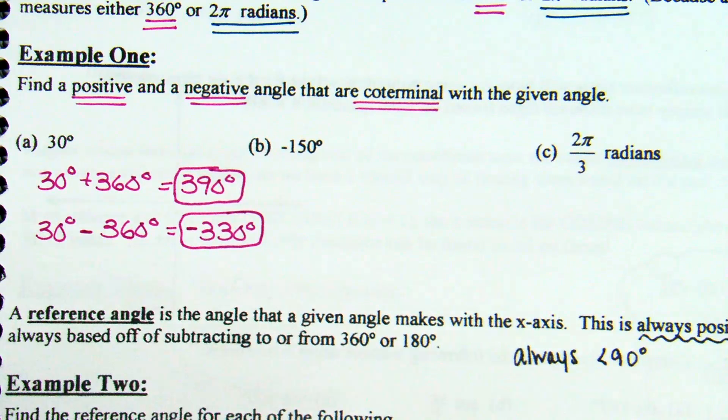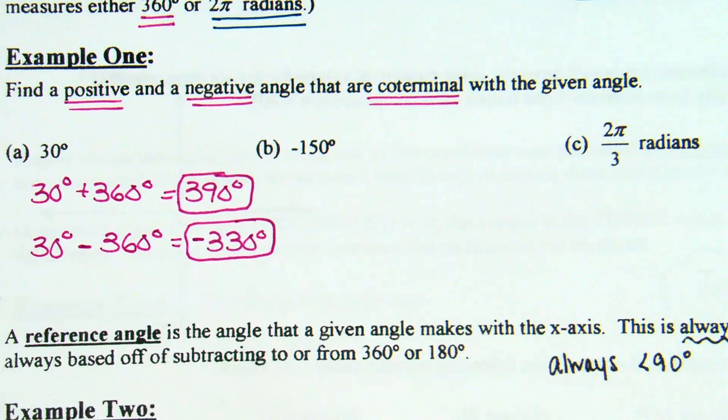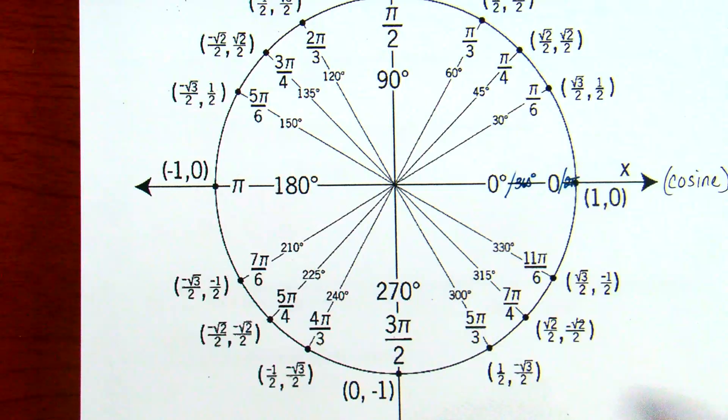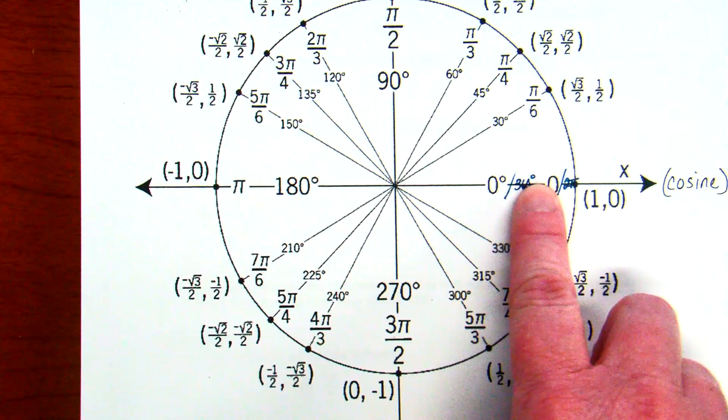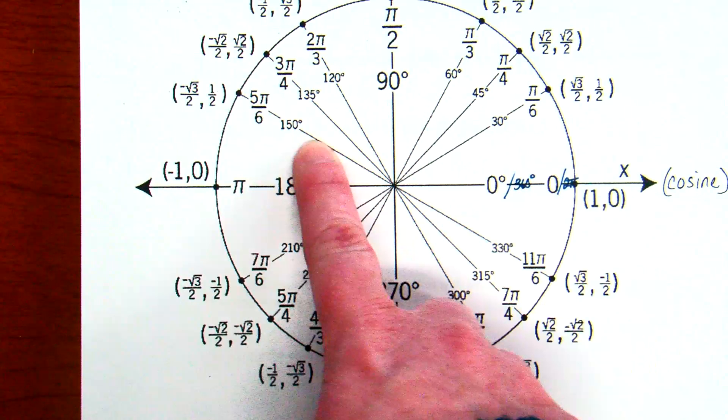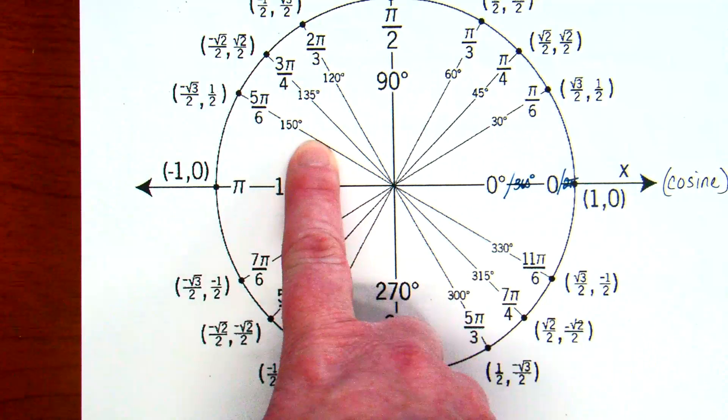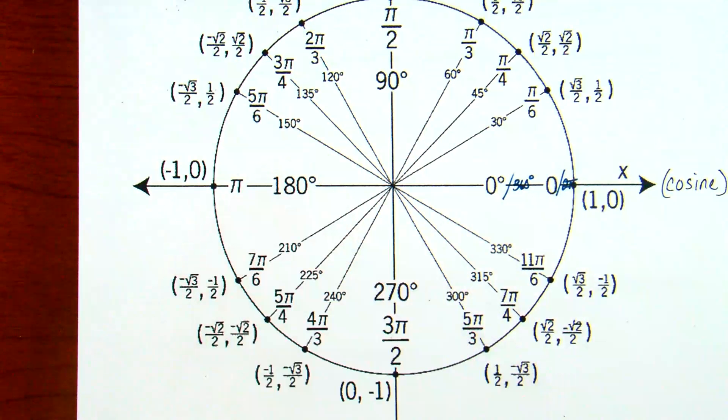Now, in all honesty, what are most of you going to do? Add 360, subtract 360, and give me those. Go for it. Part B. Negative 150 degrees. First of all, good thing to talk about. Let me pull this back up here for a moment. Where is negative 150 degrees?